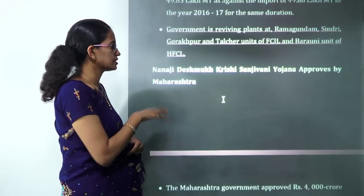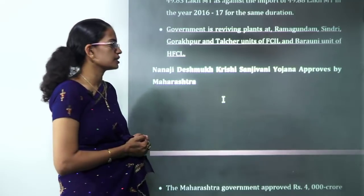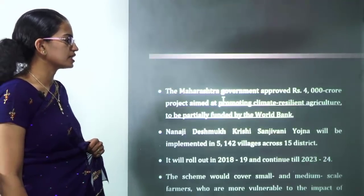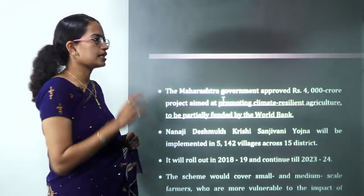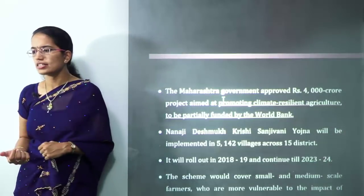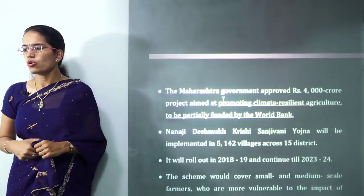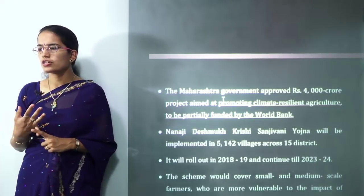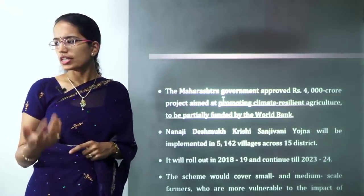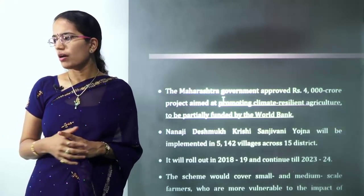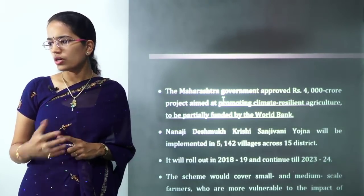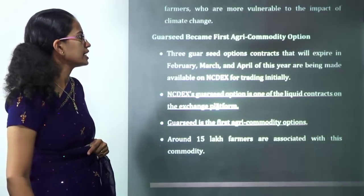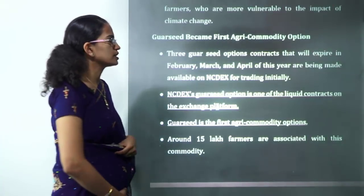The Maharashtra government has approved the Nanaji Deshmukh Krishi Sanjeevni Yojana. As the name suggests, it aims to promote climate-resilient crops in Maharashtra, encouraging farmers to grow crops that can withstand climate fluctuations.